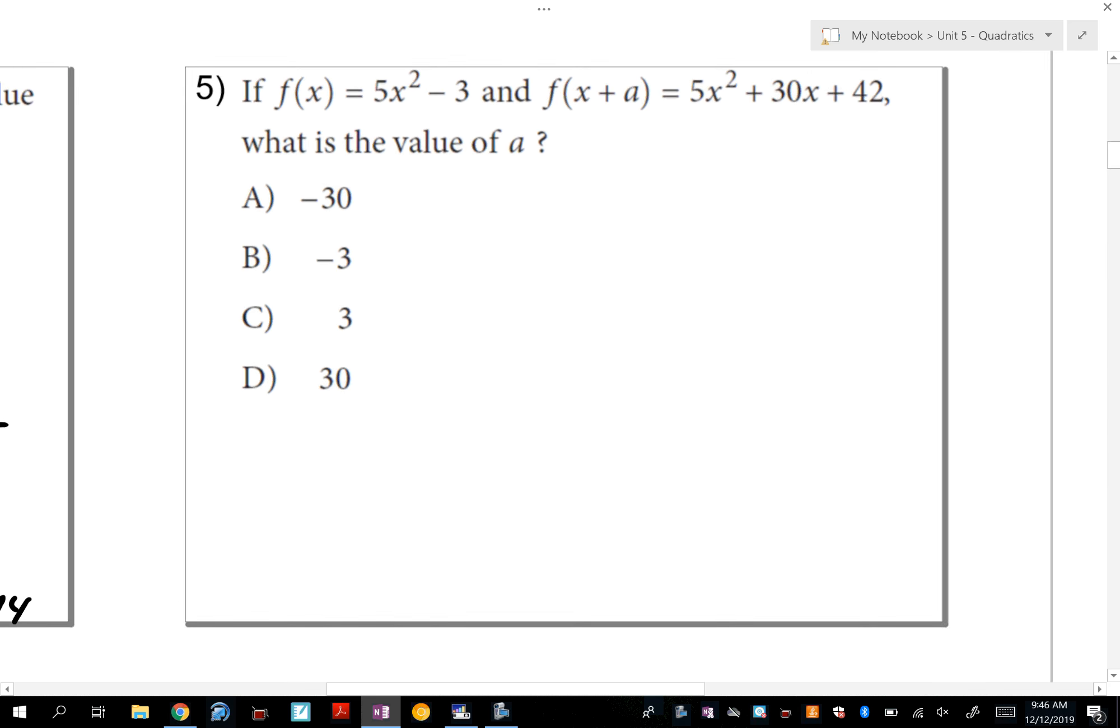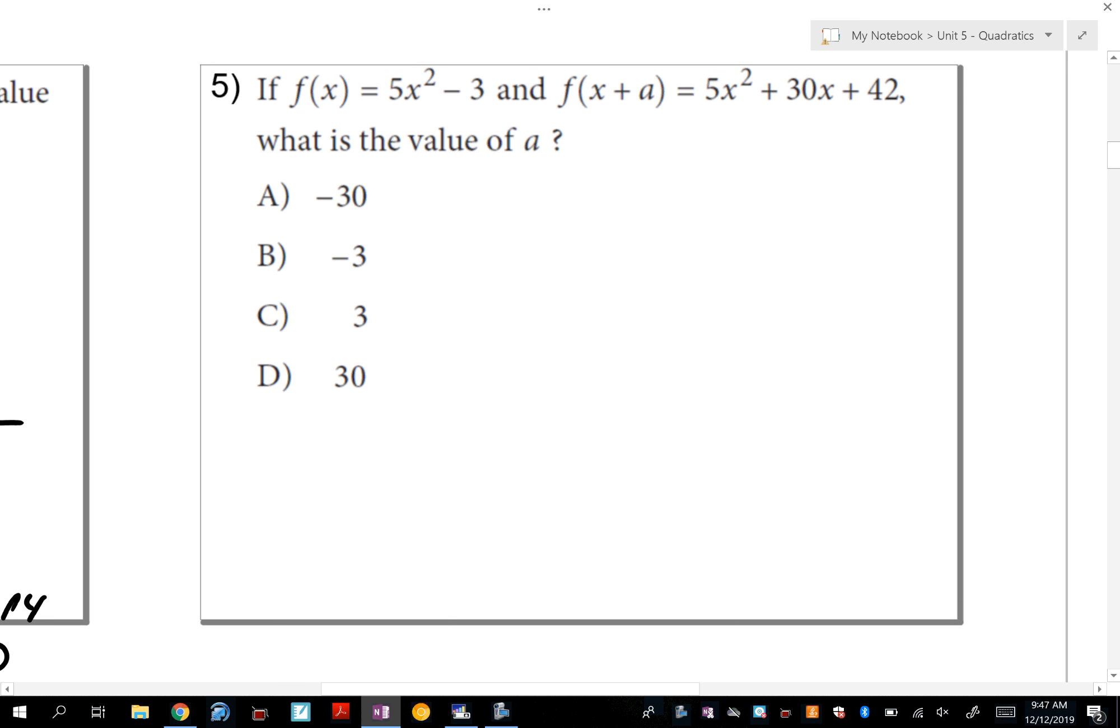The last question on this page says, if f(x) = 5x² - 3, and f(x + a) = 5x² + 30x + 42, what is the value of that a? So it's some number. So the first thing I did was I rewrote the original function f(x). It's this quadratic. Then it says, go ahead and plug in x + a for x. So watch how this substitution works. If it was a number, like f(2), you're going to replace x with that number. But it's not a number. It's an expression that I replace x with, x + a.